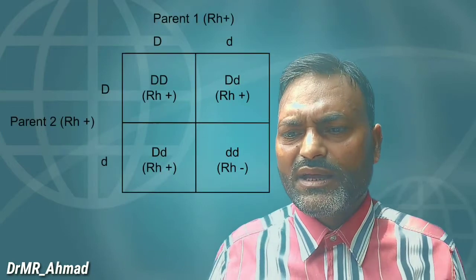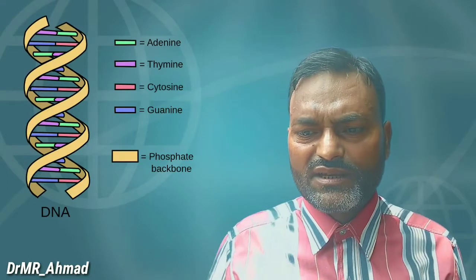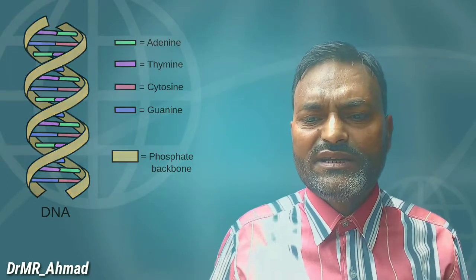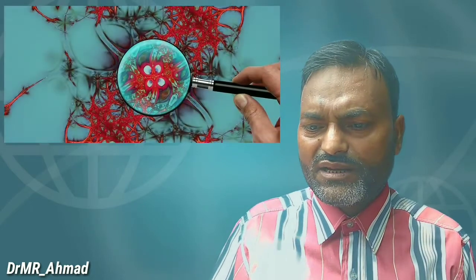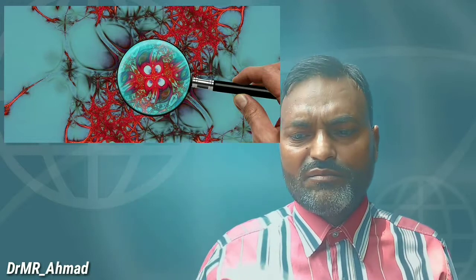Landsteiner and Wiener in 1940 discovered the Rh blood factor. Watson and Crick in 1953 proposed the model of DNA. Kornberg and Ochoa from 1955 to 1957 synthesized nucleic acid. Hubel and Thorstein Wiesel in 1981 were awarded the Nobel Prize for their researches on the brain and brain-eye connection.